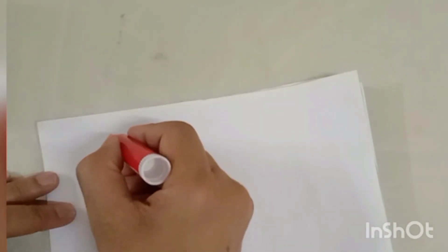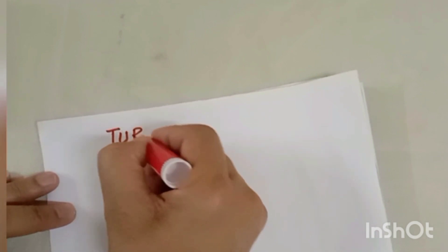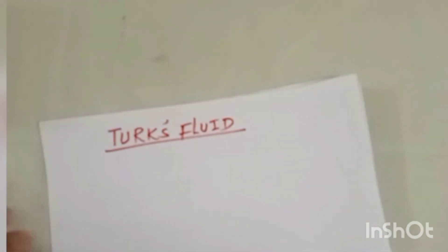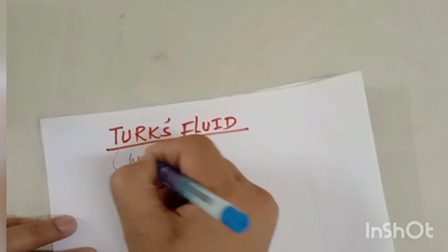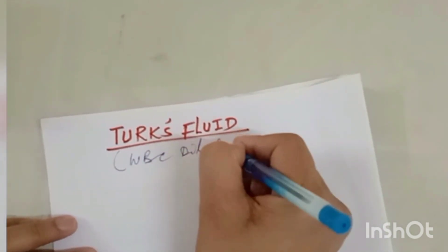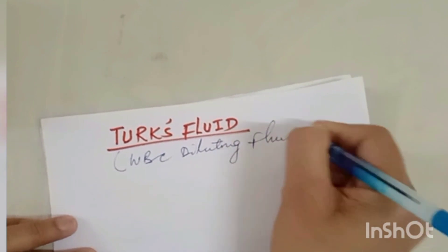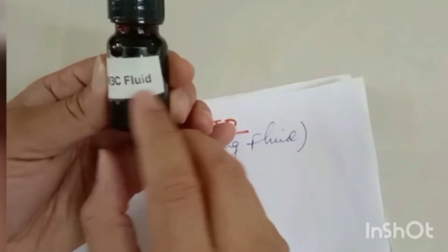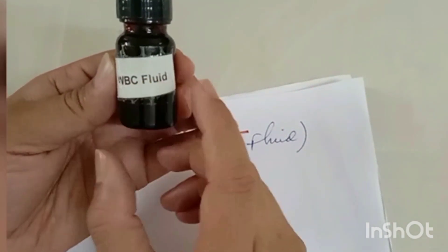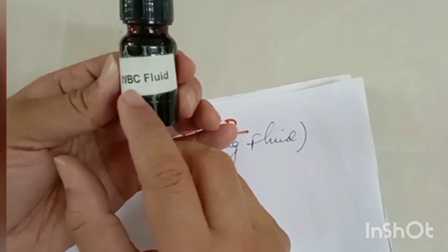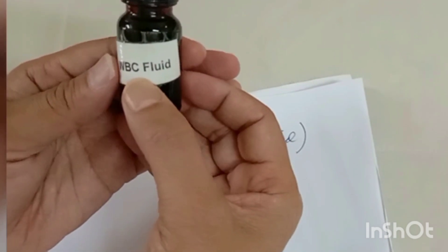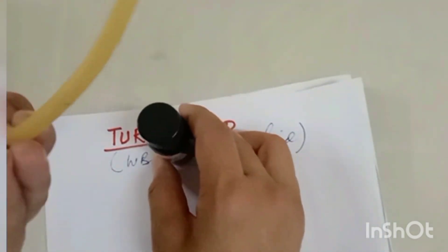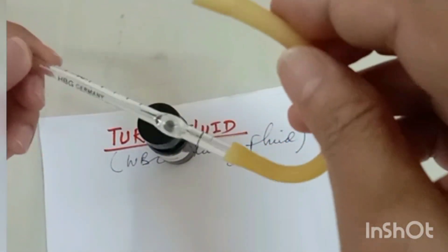In this video we will discuss about the Turk's fluid, which is the WBC diluting fluid. This is the most commonly used WBC diluting fluid for doing the WBC count, that is the total leukocyte count. For doing the total leukocyte count, we use this WBC pipette.